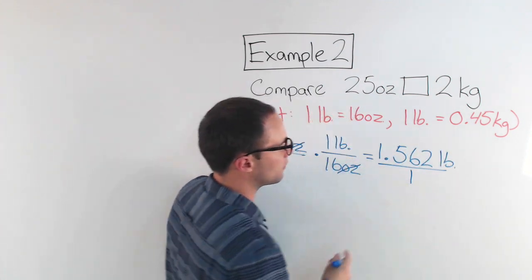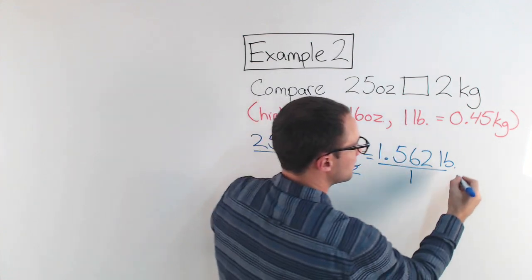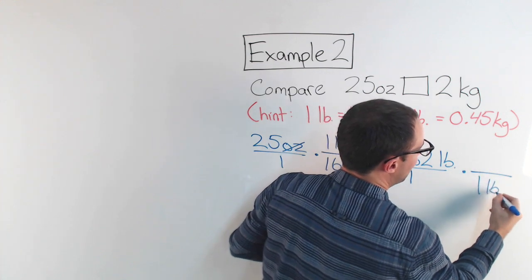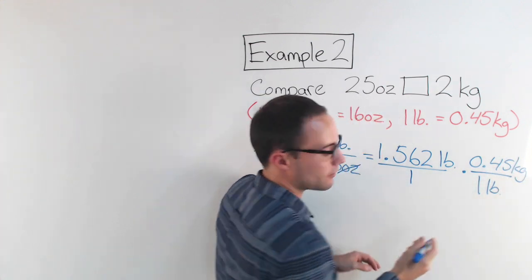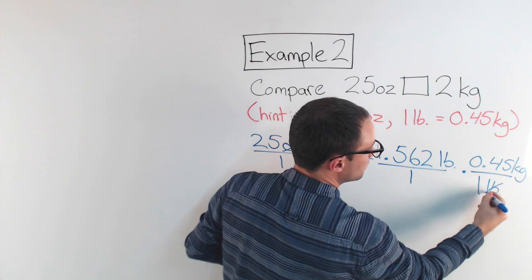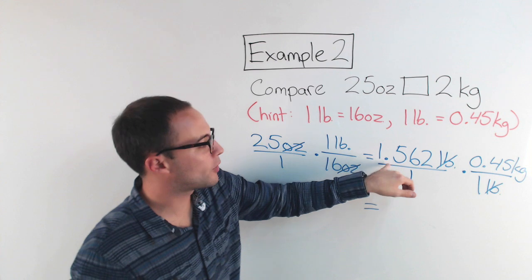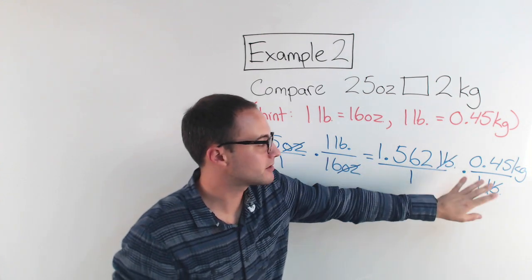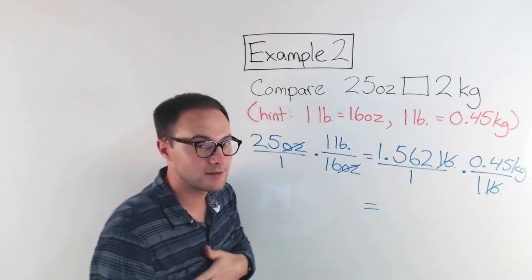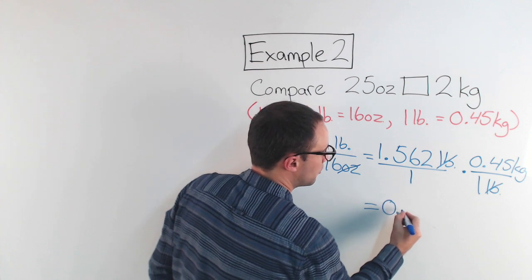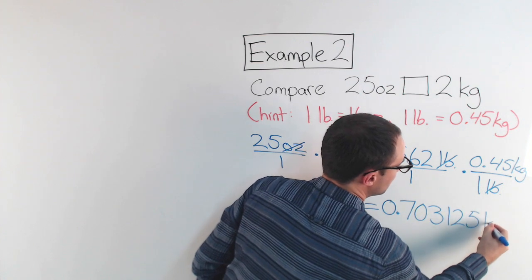So I've got 1.562 pounds, but now I need to go to kilograms. So same thing. I've got that over 1. I want to cancel out my pounds, so that 1 pound is going to be in the denominator over 1 pound. That's equal to 0.45 kilograms, kind of running out of space here. So again, these pounds will cancel out. So I'm going to do 1.562 times 0.45, and that answer will be in kilograms, and if you use your calculator, you can check your answer with me. I got 0.703125 kilograms.